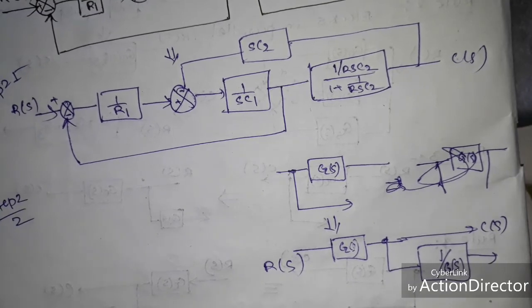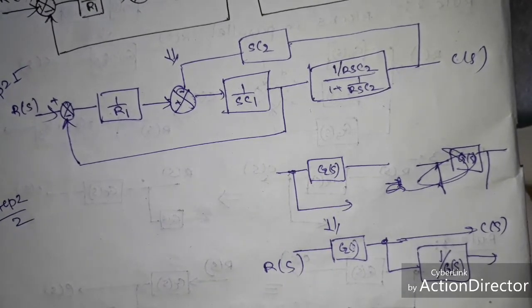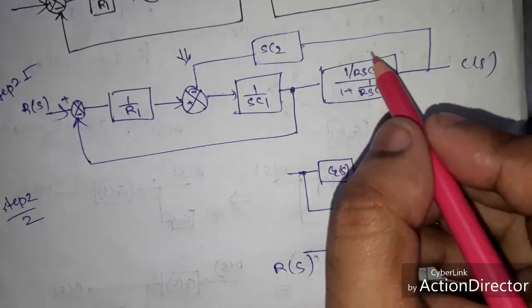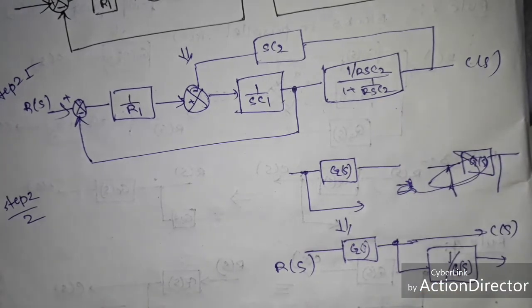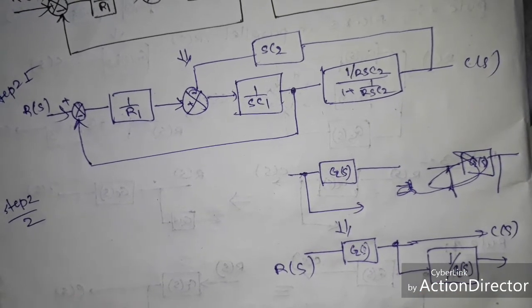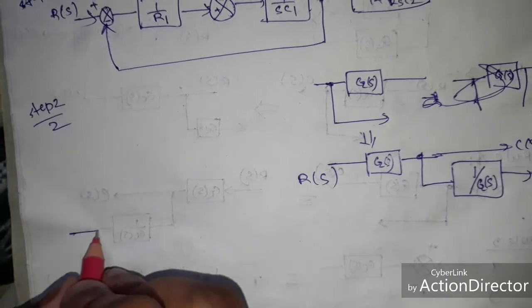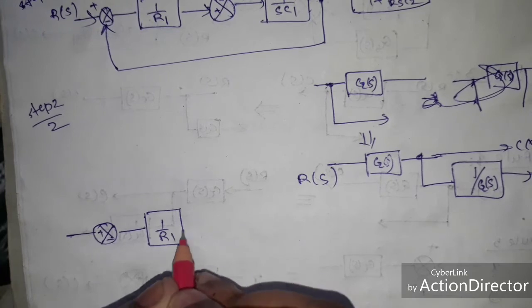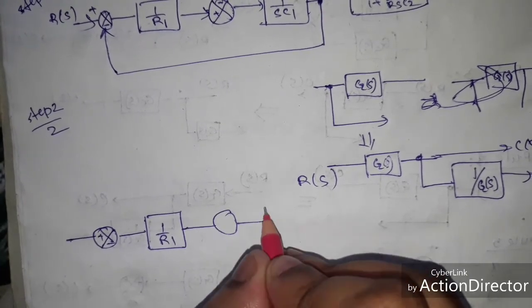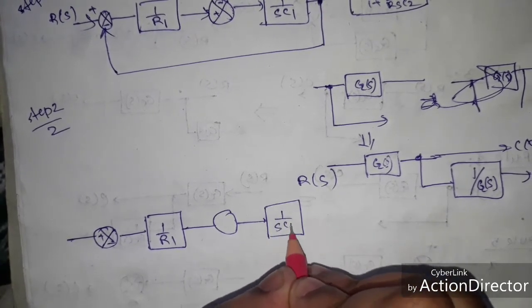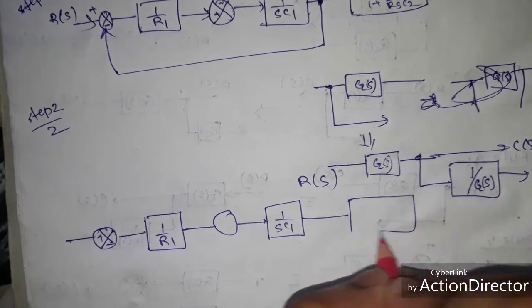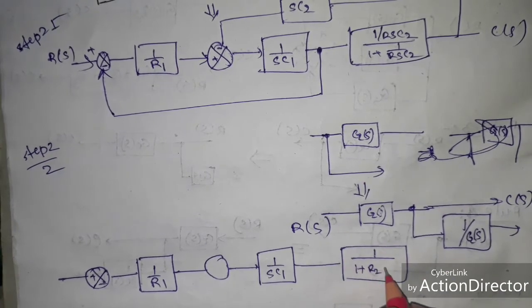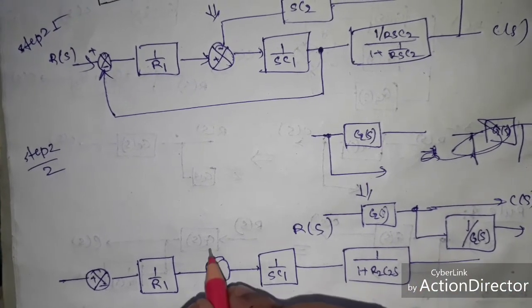After applying rule 4, we have plus/minus 1/R1, and 1/(sC1). I simplify this to 1/(1 + R2·C2·s). The rest of the components remain the same.